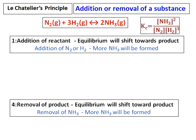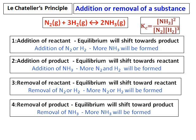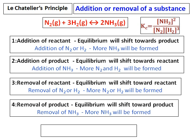Similarly, if I remove a product, the equilibrium will shift towards the product because I am removing it, so more is needed. Removal of a product shifts equilibrium towards the product. When I add a product, the reaction goes in the reverse direction to decrease this addition. The same applies to removal of a reactant — the reaction shifts towards the reactant, forming more nitrogen and hydrogen. In all these cases, only the concentration changes, and the ratio of concentrations remains the same. Therefore, the value of Kc, the equilibrium constant, will remain the same.